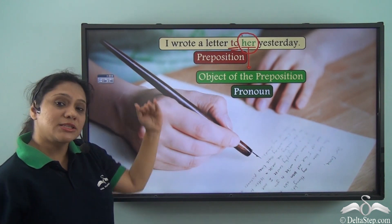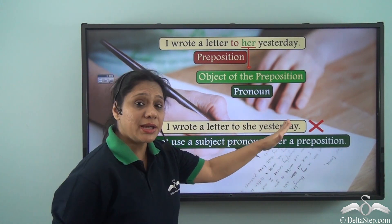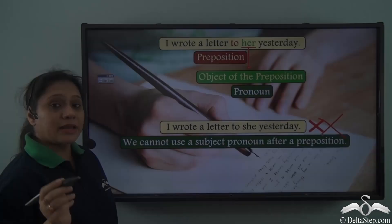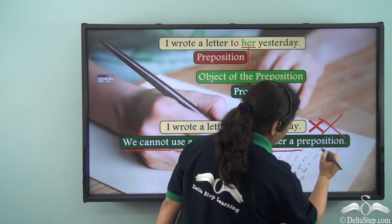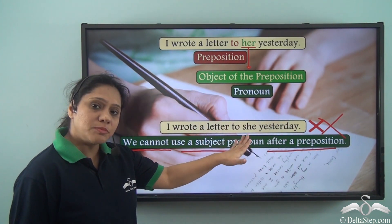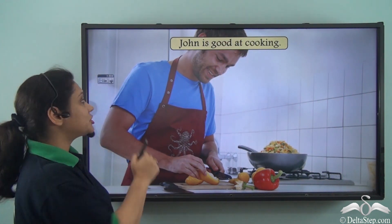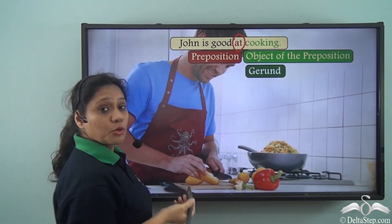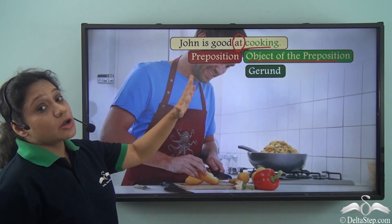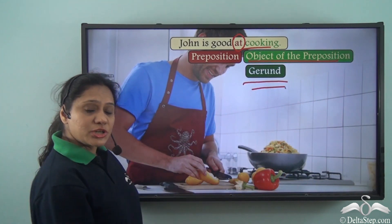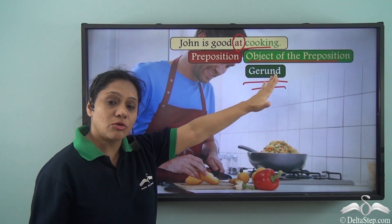Now, can we say 'I wrote a letter to she yesterday'? No, we can never say this — it is not correct grammatically. Remember that we can never use a subject pronoun after a preposition; we always have to use the object pronoun after a preposition. For example: 'John is good at cooking.' The preposition is 'at,' and 'cooking' is the object. Here 'cooking' is a gerund — the -ing verb form acting as a noun.